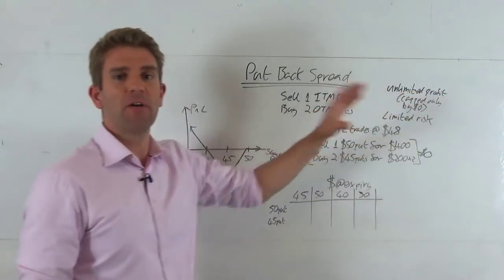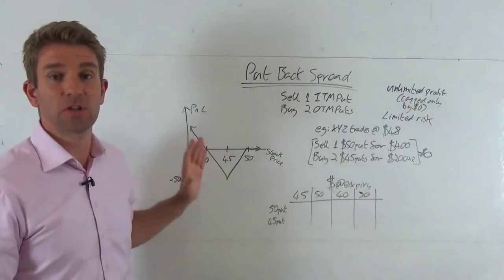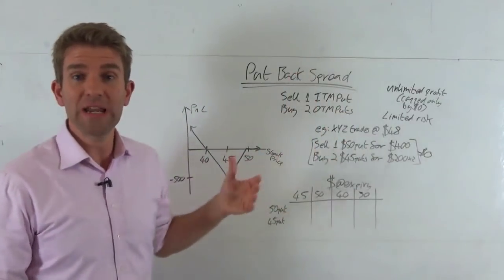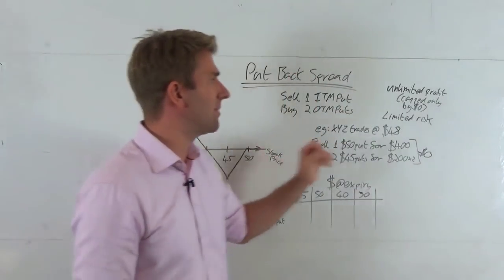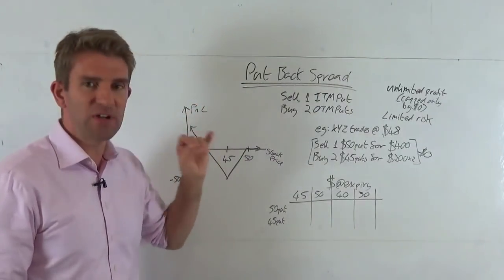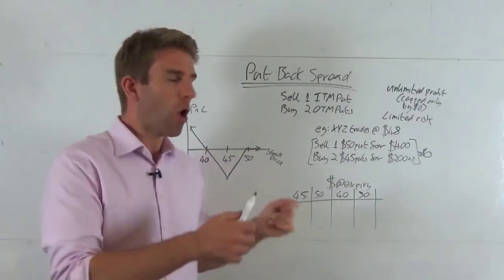One of the features of the put back spread is you've got unlimited profit. Of course if it goes to zero it can't go below zero, so there is some limit on it, but depending on the price of the stock you'll trade, that could be an awful lot and almost unlimited. And you want limited risk, so this is the trade you would take.